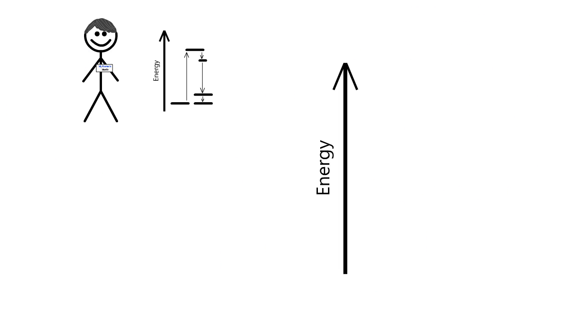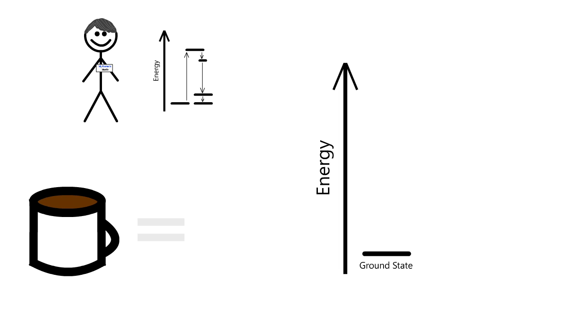Like we looked at Martin's energy levels earlier, let's take a look at a molecule's energy levels. It starts out low which is what we call a ground state. Just like caffeine could raise Martin's energy levels, light can raise the energy levels of the electrons in the molecule to what we call an excited state.